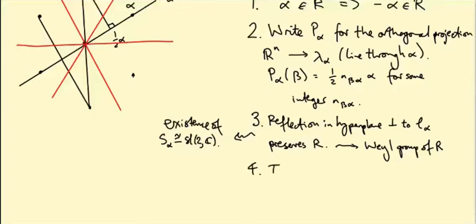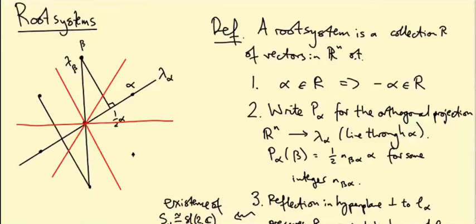Finally, the only roots on L_alpha, on the line through alpha, are plus or minus alpha. That's certainly true in this example of SL3C. Every line just contains alpha and minus alpha and nothing else, apart from the origin. That's not a root.